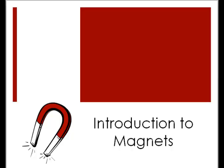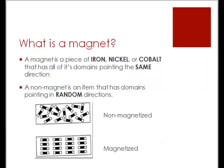First, we'll be talking about the definition of a magnet. A magnet is an item that contains nickel, cobalt, and iron. It has all of its domains pointing in the same direction.